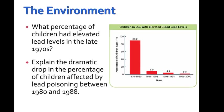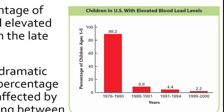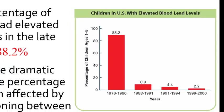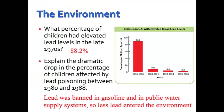Looking at a graph of children in the U.S. with elevated blood lead levels: in the late 1970s, about 88.2% of children had elevated lead levels. The dramatic drop between 1980 and 1988 can be explained by the fact that lead was banned in gasoline and in public water supply systems, so less lead entered the environment, resulting in a much lower level of lead in children — dropping from 88.2% in the late 70s down to 2.2% by 2000.